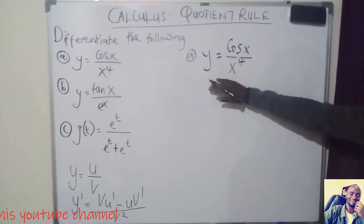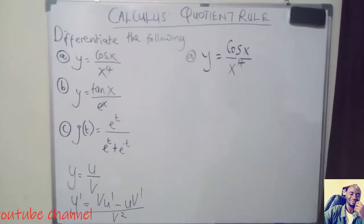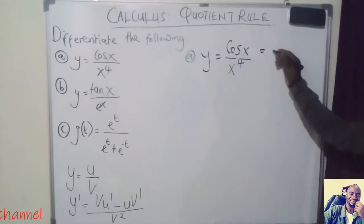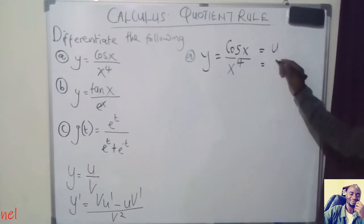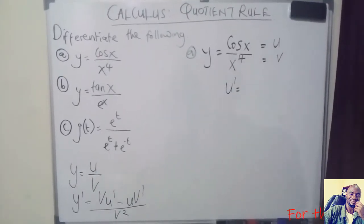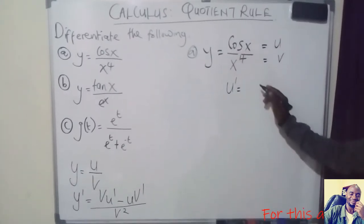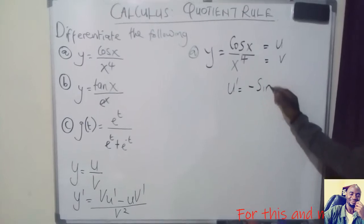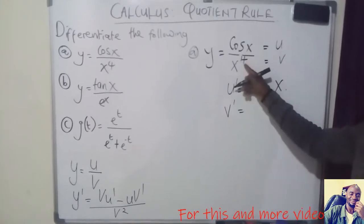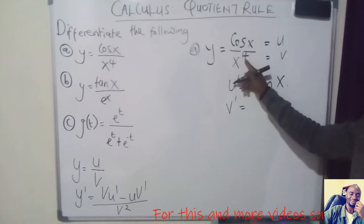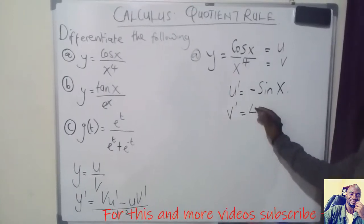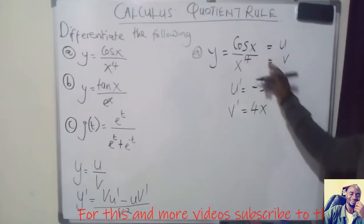In our first question, the numerator should always be named as U, then the denominator should always be named as V. U prime means the derivative of the numerator. When we differentiate this one, we are going to get negative sine X. Then V prime: the power multiplied by the coefficient — the power here is 4, the coefficient is 1, so 4 multiplied by 1 gives 4. Then X to the power 4 reduces by 1, giving X to the power 3.